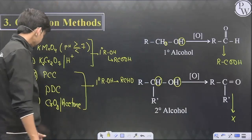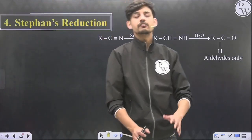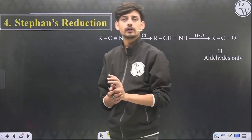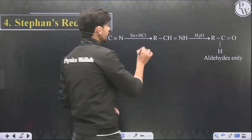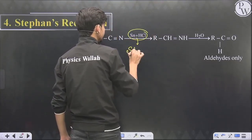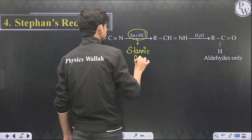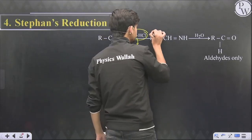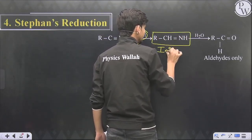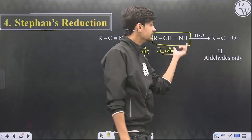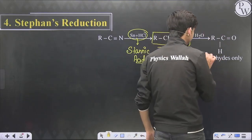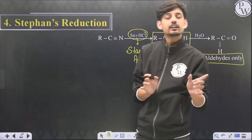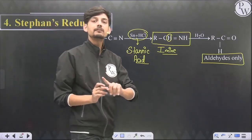The next method is cyanide reduction, known as Stephen's reduction. This is a selective reduction because the cyanide group has three C≡N bonds and we are reducing only one pi bond using tin and HCl, which combinedly give stannic acid, a weak selective reducing agent. This reduces only one pi bond and gives an imine. This imine on hydrolysis is converted into a C=O, which is aldehyde, because reduction always gives hydrogen.